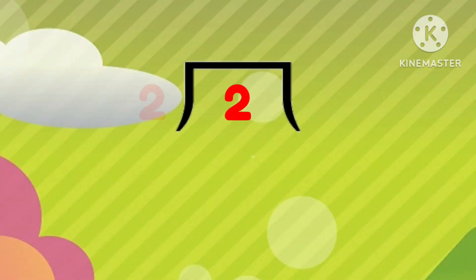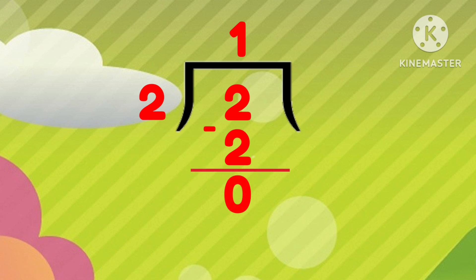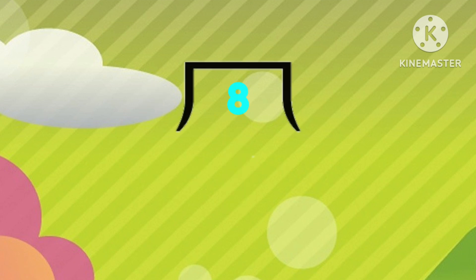When 2 is divided by 2, the remainder is 0. Similarly, when 8 is divided by 2, the remainder is 0.